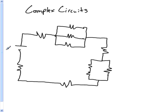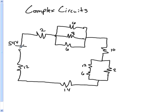So let's say this is a 54-volt battery. The resistors are: a 2, a 6, an 8, another 6, a 10, a 12, a 2, a 6, a 14, and a 12. I just made those numbers up off the top of my head, so it's going to be quite a problem. All these are resistances in ohms — I just didn't want to spend the time writing ohms for each one.